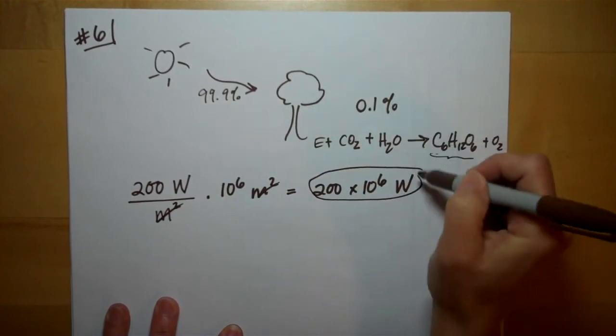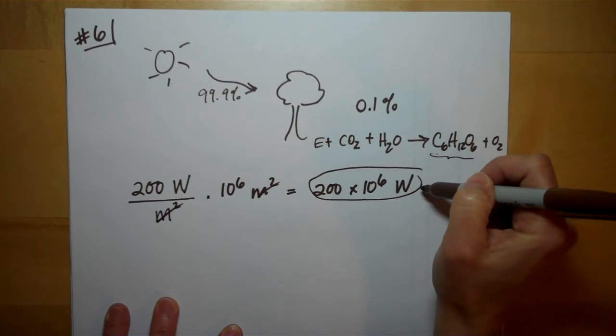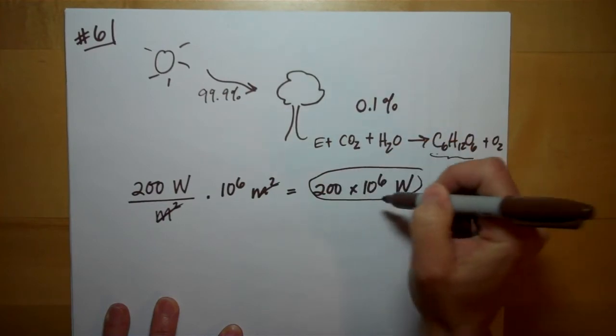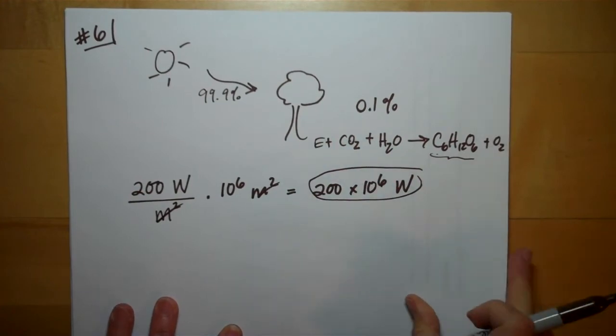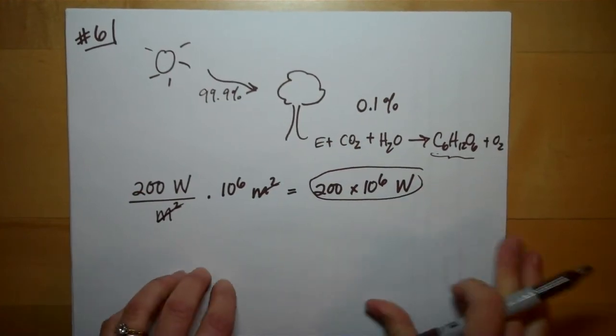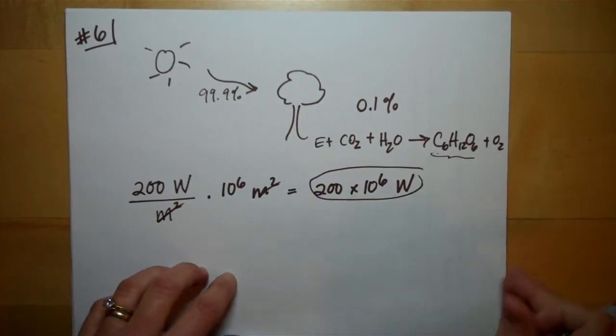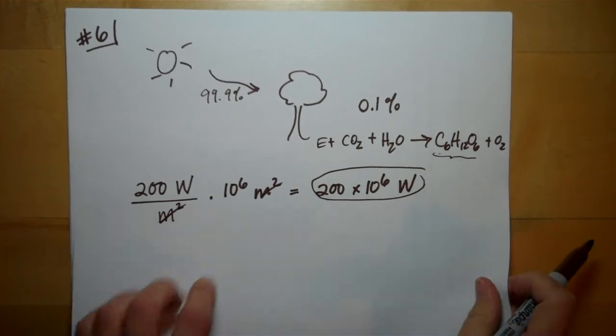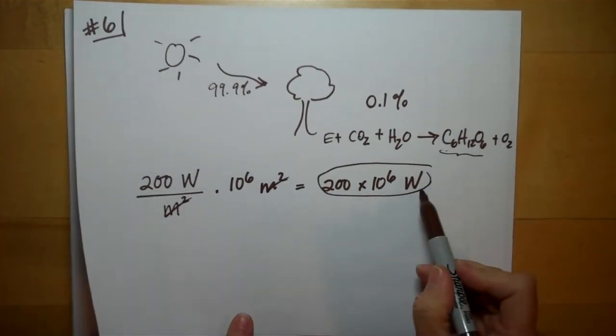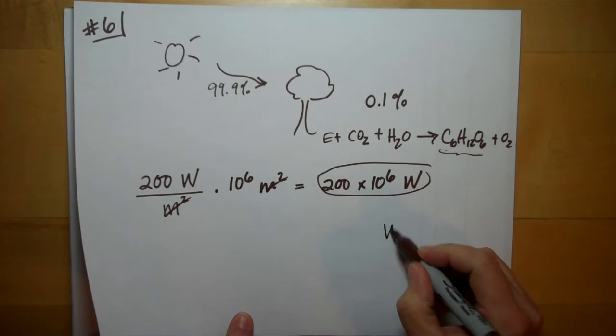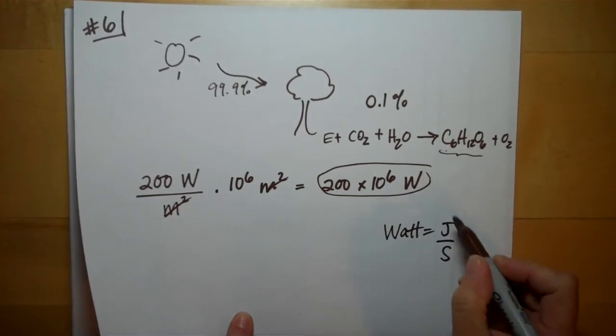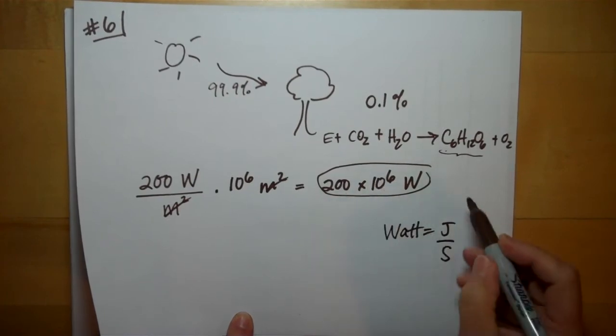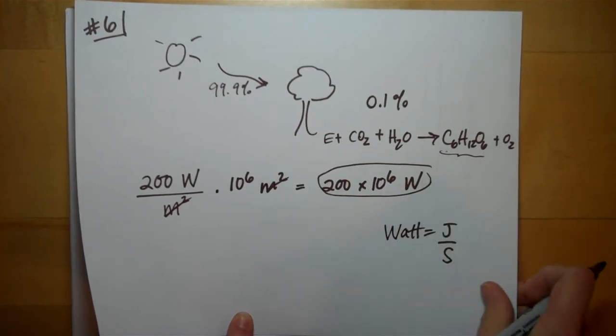Now, you could take your efficiency product here, or you could wait to the end. My mind prefers to wait for it at the end, but you can do it either way. The math will work out the same. So what do we do with this? We know, and remember, remember what a watt is. A watt is a joule per second. So 200 million joules per second of energy coming in.